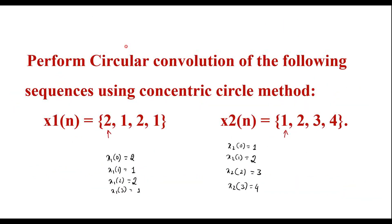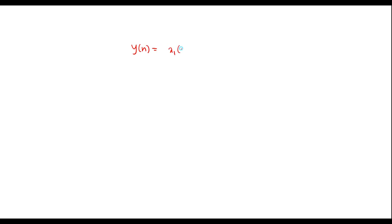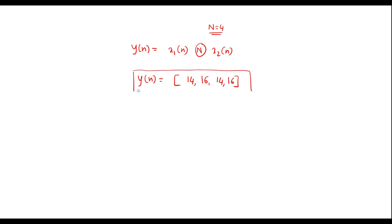The length of x1[n] is 4 and the length of x2[n] is 4, so the output sequence y[n] also has length 4 (N=4). Therefore, the circular convolution y[n] = x1[n] ⊛ x2[n] = {14, 16, 14, 16}. This is the result for the circular convolution between the two given sequences. Thank you for watching.